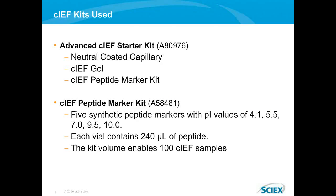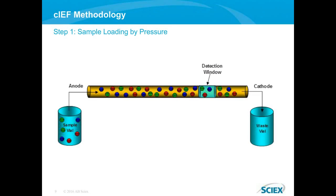The kits used in this method include the advanced CIEF starter kit, which includes the correct neutral coated capillary needed for this separation, the proper CIEF gel that fills the capillary, and the CIEF peptide marker kit. More specifically, the peptide marker kit consists of five synthetic peptide markers with a wide range of PI values from 4.4 all the way up to a PI of 10. Each vial will contain 240 microliters of the marker, which is roughly enough for 100 CIEF sample injections.